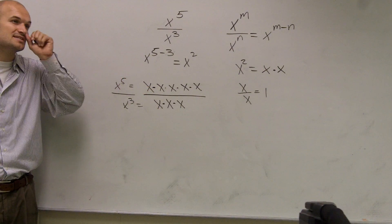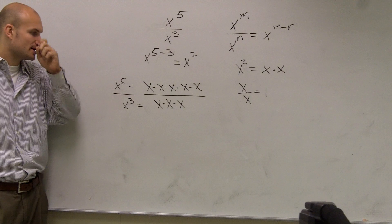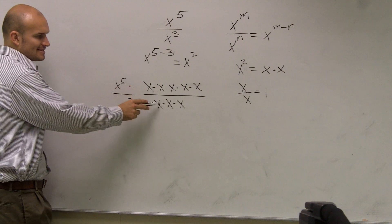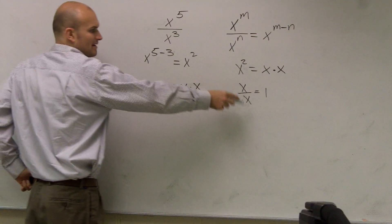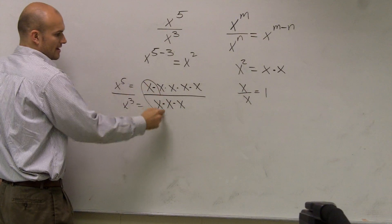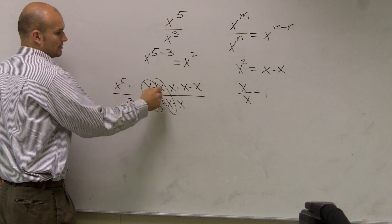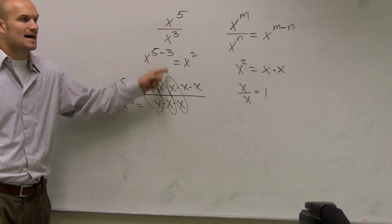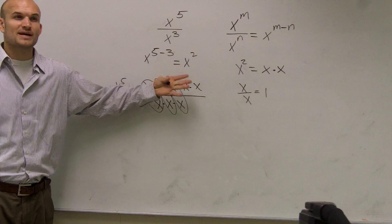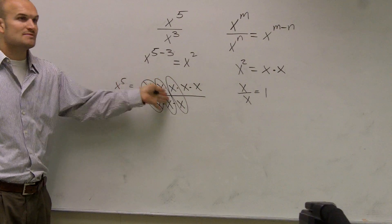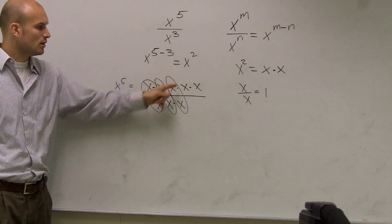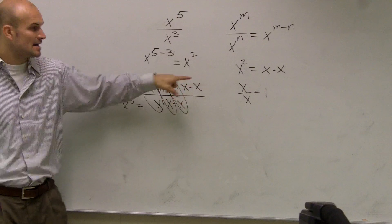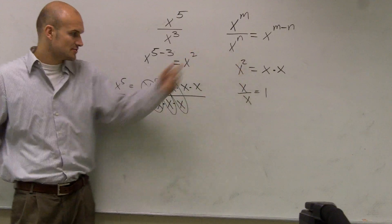What I'm doing is rewriting this so you guys can see what it would look like. So now I have x's divided by x's. Well, x divided by x equals one — so that equals one, that equals one, and that equals one. One times one times one is obviously going to equal one, and I'm just left with x times x. x times x gives us x squared.